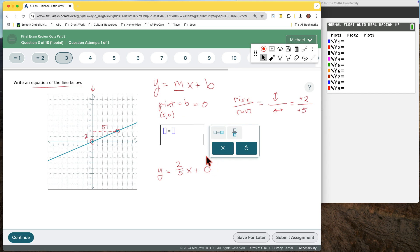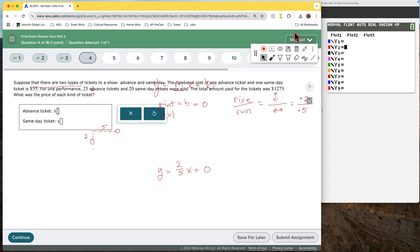But make sure you get the equation. They ask for an equation. So we will put in y equals two fifths. Don't forget your variable x. And now plus zero, we don't need to put it in. That's going to do it for us. We'll see you next time.